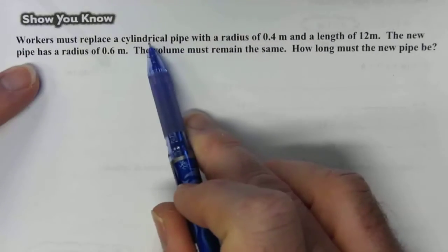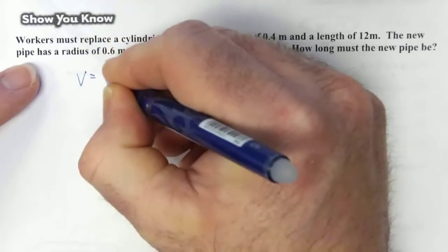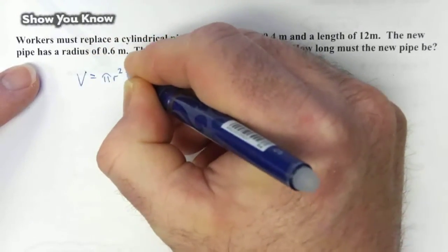So we need to calculate the volume of the original pipe to see what it is we're replacing. The volume of a cylinder is pi r squared h.